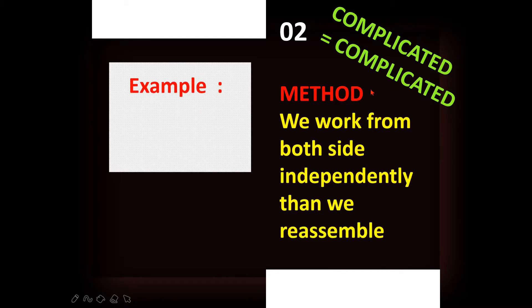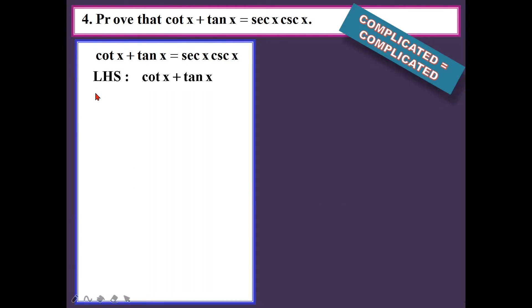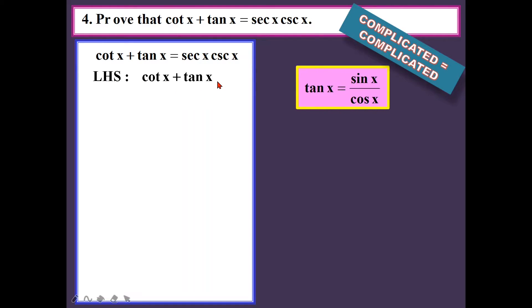The second type of question you might get is complicated equals to complicated. You have a complicated side equals a complicated side. To solve this type of question, we work from both sides independently and then reassemble. For this question, let's do one side first — I will start from the left-hand side. I have cotangent x plus tangent x. Cotangent x is cos x over sin x, and tangent x is sine x over cos x — making it into sine and cosine.